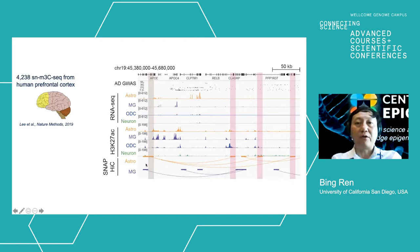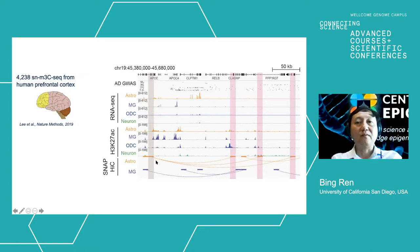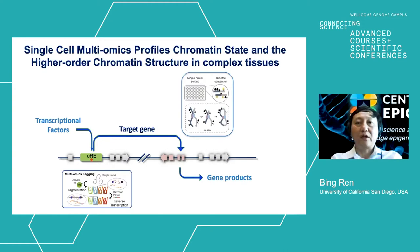These loops allow us to link distal non-coding variants to their putative target genes. For example, here is APOE, a risk locus associated with Alzheimer's disease. APOE is strongly expressed in astrocytes, and several distal elements harboring APOE variants are now linked to APOE expression. In summary, we now have tools to overcome some of the major challenges of interpreting non-coding variants in the human genome. In particular, Paired-Tag and single-cell methyl Hi-C allow us to interrogate the chromatin state of each element in individual cell types and link them to their putative target genes.